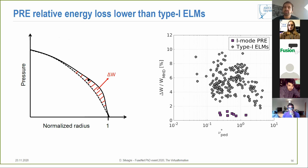Now if we want to understand the size of these events we can have a look for example at the energy loss, this delta W normalized by the total energy content of the plasma. This relative energy loss is about one percent and this is lower than type-1 ELMs.